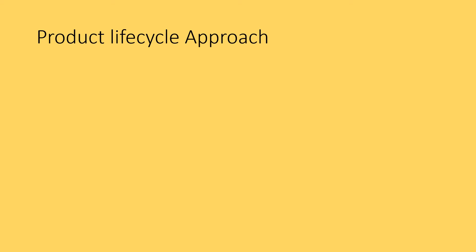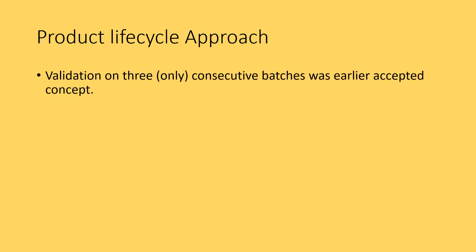Let us understand the product life cycle approach of process validations. Validation on three consecutive batches was the earlier accepted concept. Statistically, selection of three consecutive batches may be adequate to establish the consistency of the process, and this strategy was accepted earlier.